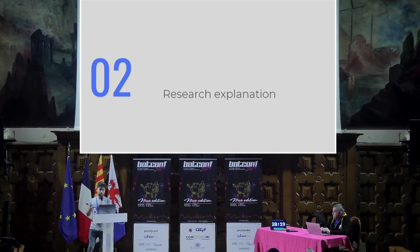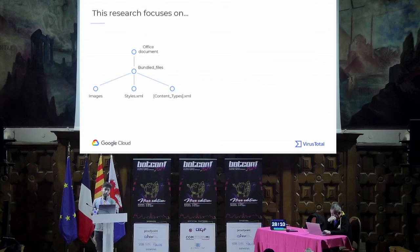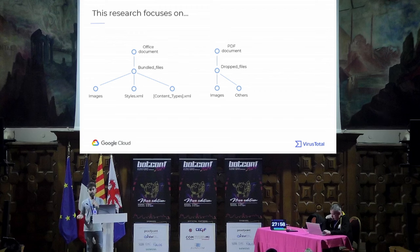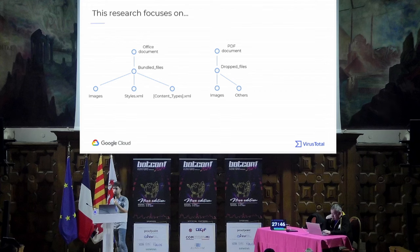Let me explain how I did this research. For Word documents we'll focus on bundle files — specifically the images, the styles XML file, and the content types XML file. For PDF documents, instead of bundle files we have drop files in VirusTotal, and we'll focus on images dropped by PDF files and other artifacts dropped during PDF execution in our sandboxes. For emails, we have something similar with bundle files but also an email attachments section that can be used for this purpose.